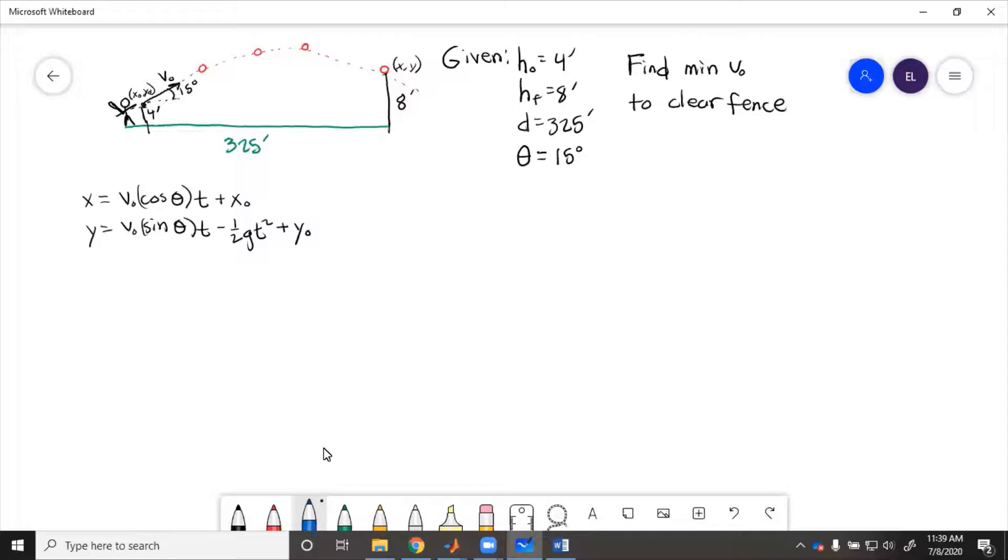So we'll start here. x minus x initial equals v initial cos theta times t. x minus x initial is 0, so x minus 0. So this here is 0, 4, and this here is 325, 8. So this equals v initial cos 15 degrees times t, which x is 325. So then we get 325 over cos 15 times v initial equals t.